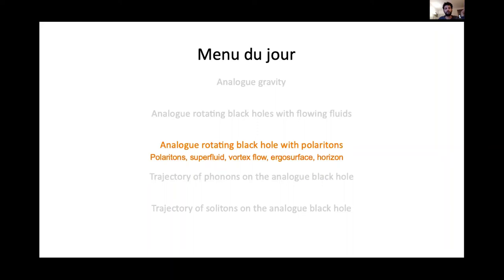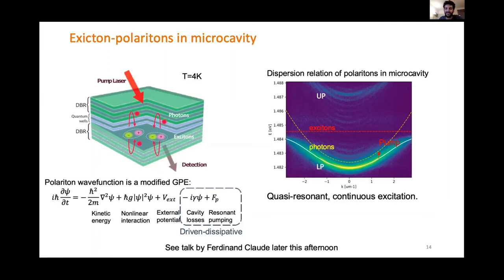This motivated us to look into this in Paris, because it's quite easy to create an analog rotating black hole with polaritons. We use a strong laser beam that pumps semiconductor quantum wells inside a microcavity. We pump quasi-resonantly with continuous excitation — a slight detuning between the pump and the lower polariton branch. The wave function of the polaritons is described by a modified Gross-Pitaevskii equation with additional driven-dissipative terms, which implies that polaritons behave as a superfluid under certain conditions.